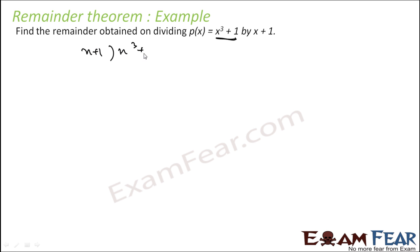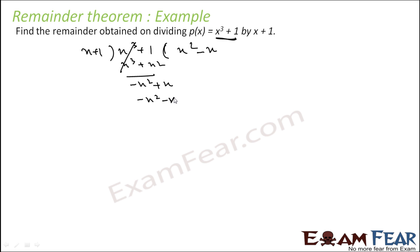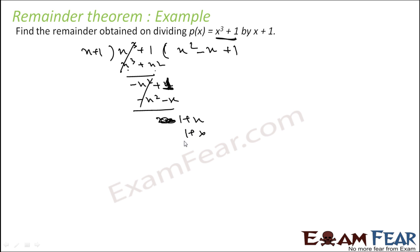We have two ways. One is to actually divide. Let's multiply with x²: from x³ + x², it gets cancelled and you get -x² + x. Divide -x: -x² - x, this is cancelled, you get 2x. Then 1 - x² becomes 1 + x, so there is no remainder. That is one way.